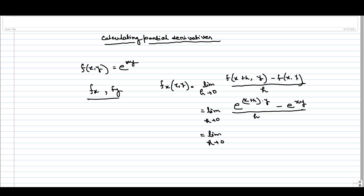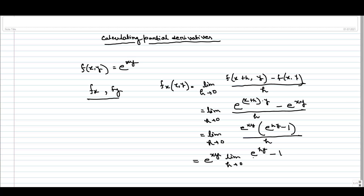Here we get the limit as h tends to 0 of e^(xy) times [e^(hy) minus 1] divided by h. Since e^(xy) does not depend on h, we can take it outside the limit. We keep only those terms which are dependent on h, so we need to calculate the limit as h tends to 0 of [e^(hy) minus 1] divided by h.